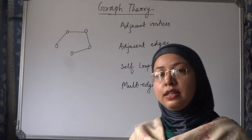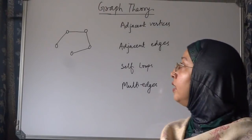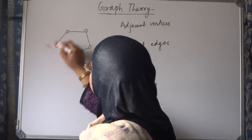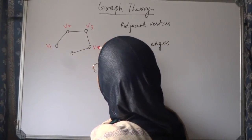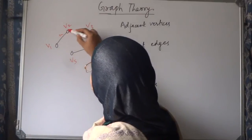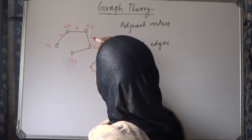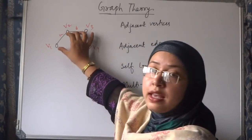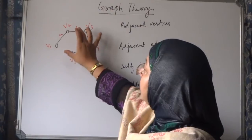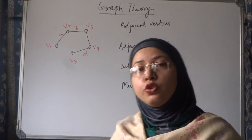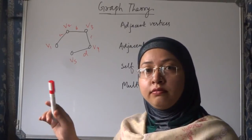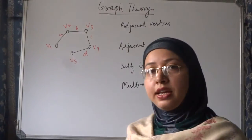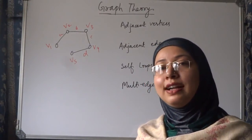Now, we will see one more example about graph. Let us take this graph and suppose these are vertices v1, v2, v3, v4, v5 and these are edges a, b, c, d. So, a is the edge which is joining two vertices v1 and v2. So, v1 and v2 are called adjacent vertices for edge a.